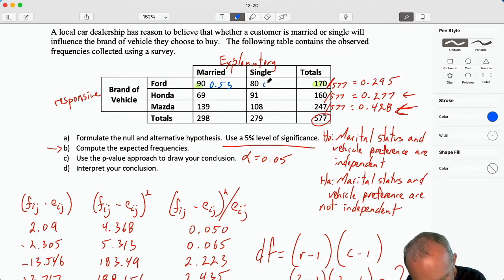80 divided by 170, 0.47. Now I'm comparing these against those totals. 69 divided by 160. So here I have a point estimate of 43. Well, the next one, of course, we know what it's going to be: 57. The next, 139 divided by 247. So I'm looking here, and this is my denominator. Here I have 56. And 108 divided by 247, here I have 44.